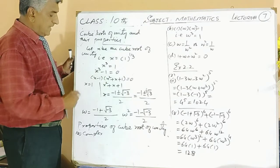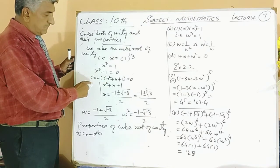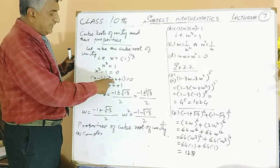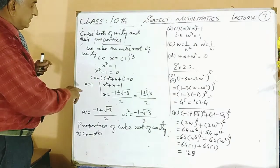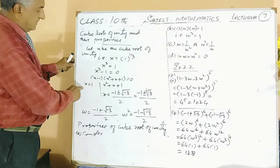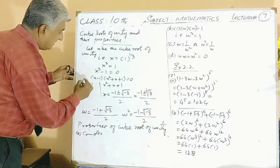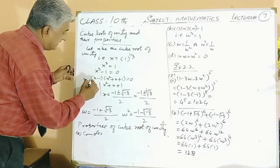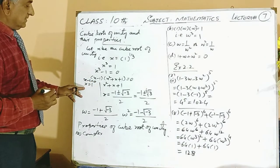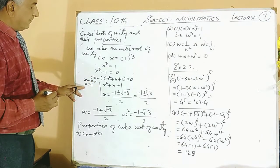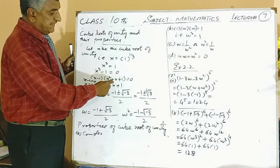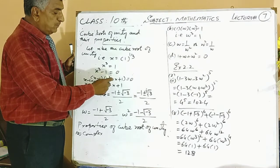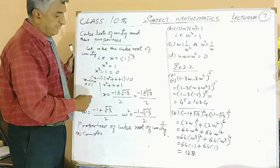When the product of these two brackets is equal to 0, this gives us x minus 1 = 0, which gives us a root of unity, that is x = 1. And in this case, you have to use the quadratic formula.